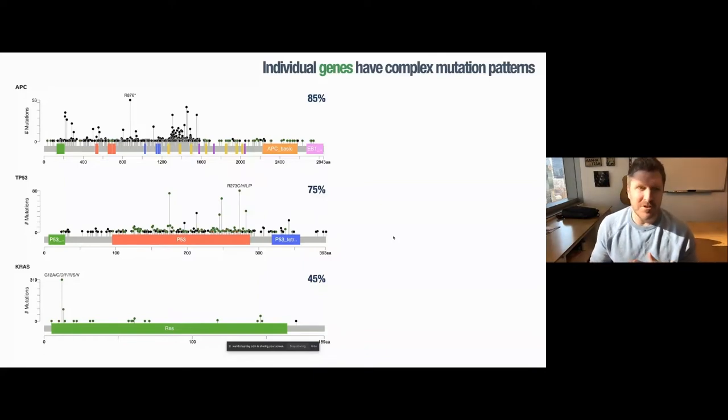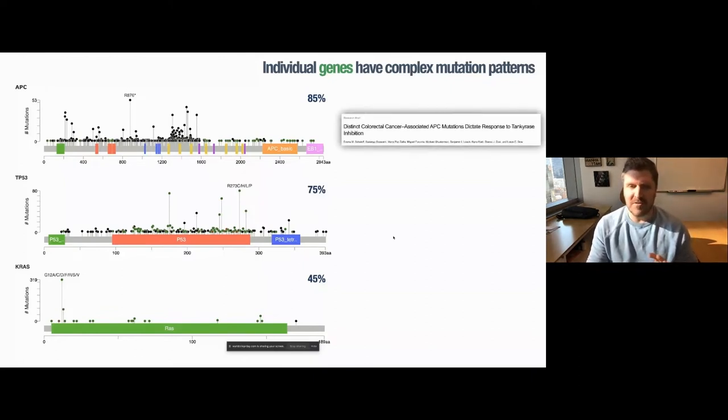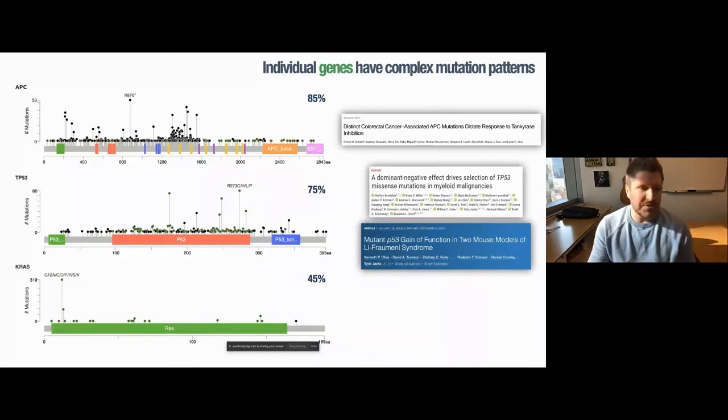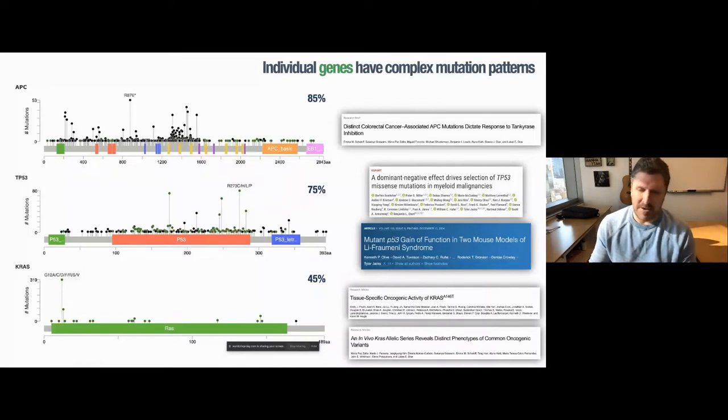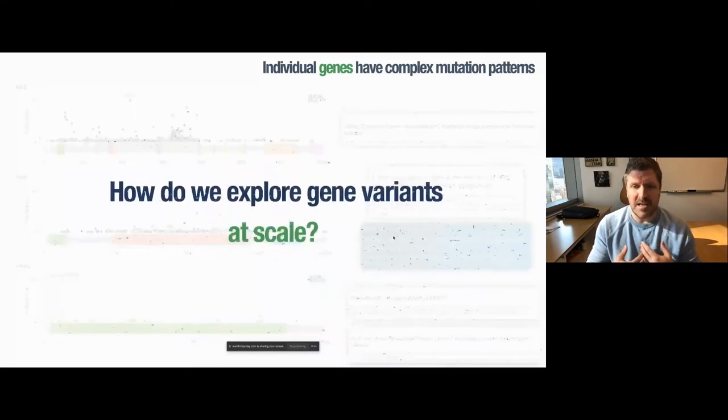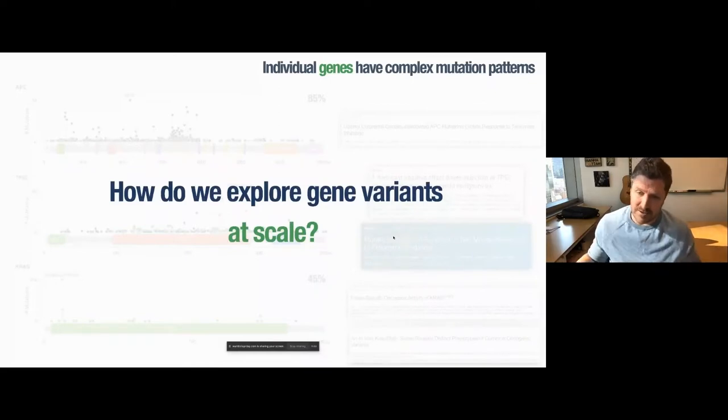APC is a classic tumor suppressor. We see lots of nonsense truncating mutations and very few missense alterations. P53, we see a wide variety of missense mutations with multiple hotspot mutations, where we see piling up of individual mutations throughout the coding sequence. And KRAS is a classic oncogene where we see very high accumulation of hotspot mutations, particularly at codons 12 and 13. We have anecdotal data from our lab, as well as many other labs around the world, that the types of mutations that you see in these genes not only have an impact on the way a tumor develops or whether a tumor develops at all, but also the way they respond to particularly molecularly targeted therapies.